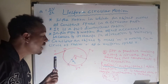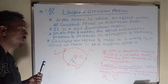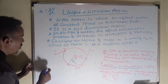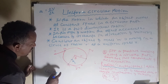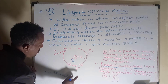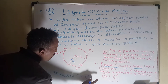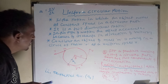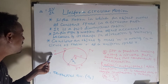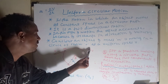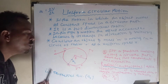The second component of acceleration is tangential acceleration, denoted as AT. Tangential acceleration is formed due to a change in the magnitude of velocity.